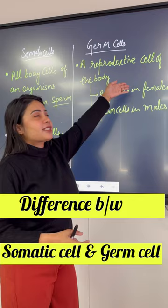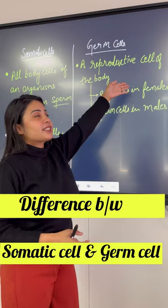Germ cells are reproductive cells. The reproductive cells include your sperm and egg cells. These are the germ cells.